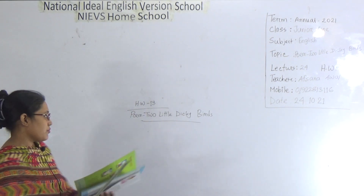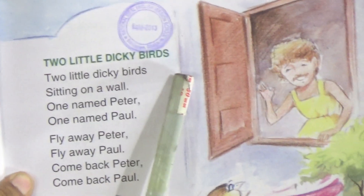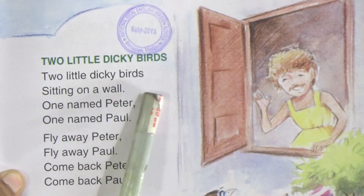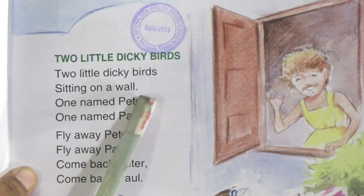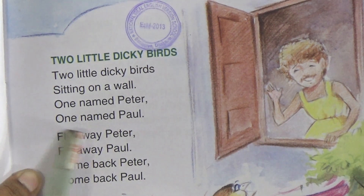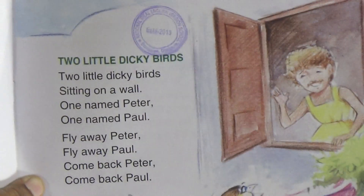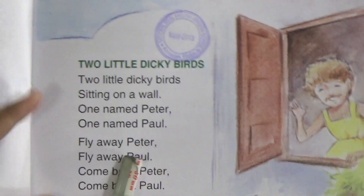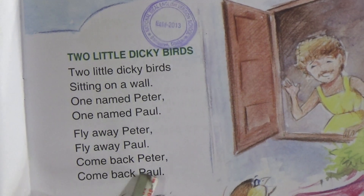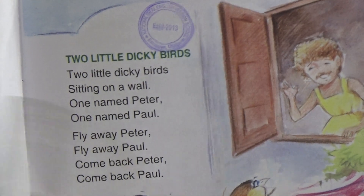Look at the book. We will read the poem from the book — Two Little Dicky Burst. Sitting on a wall. One named Peter. One named Paul. Fly away Peter. Fly away Paul. Come back Peter. Come back Paul.